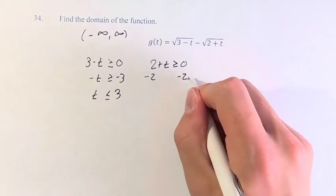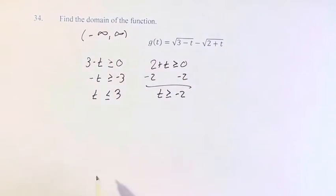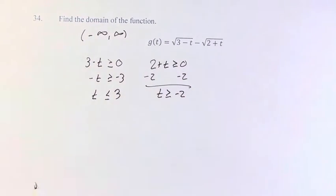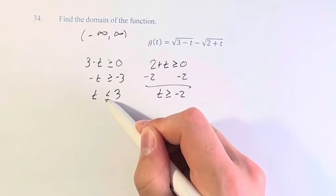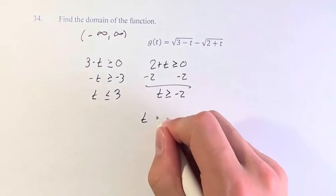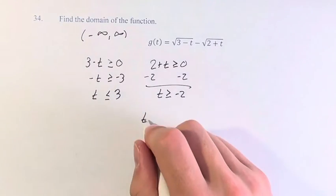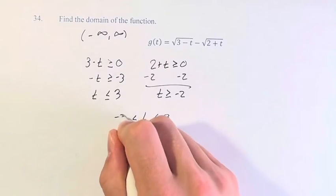And a similar thing here, t has to be greater than or equal to negative 2. So for a valid input of g to exist, it has to satisfy both of these restraints — greater than negative 2 and less than or equal to 3. Therefore, t has to follow both of these and we put it in a double inequality: t is less than or equal to 3, but greater than or equal to negative 2.